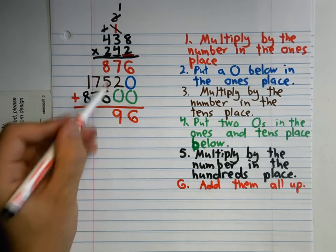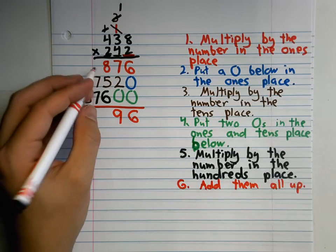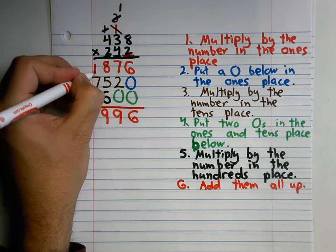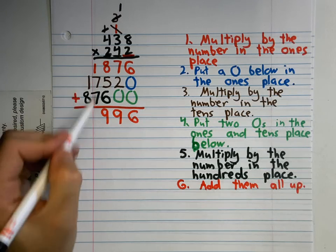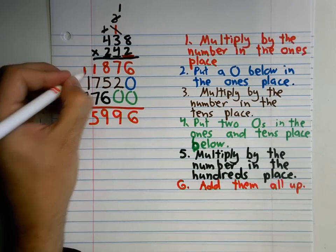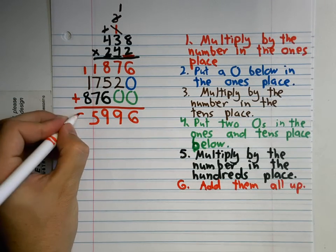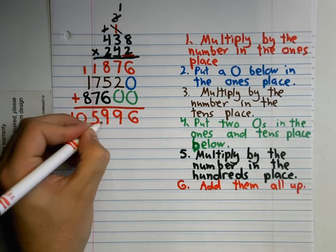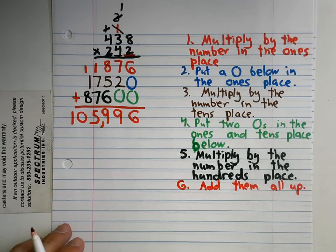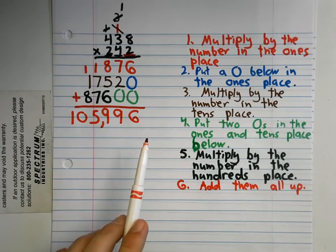8 plus 5 plus 6 is 19. 1 plus 7 plus 7 is 15. 438 times 242 is 105,996.